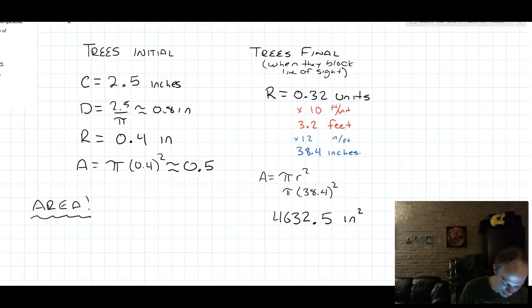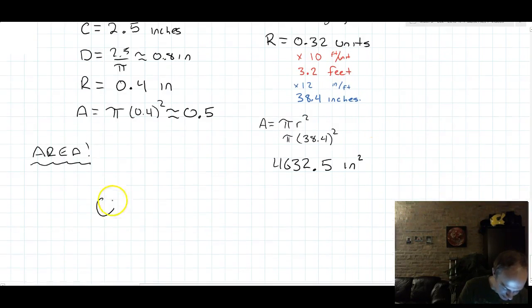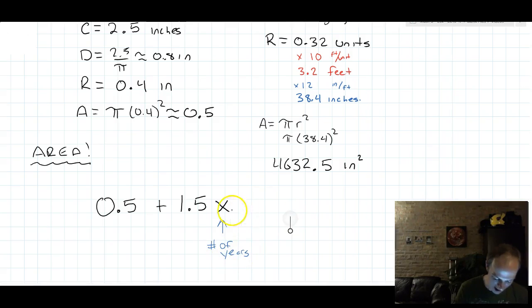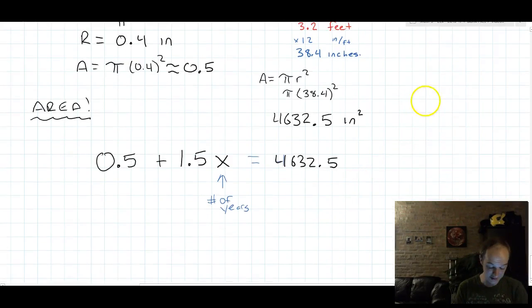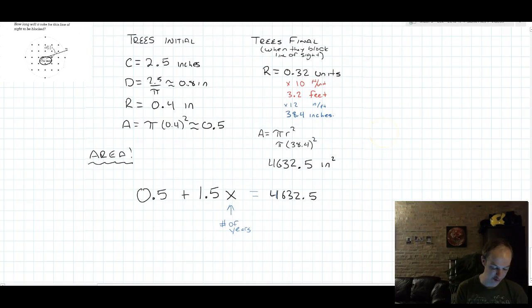Now we know three things about the area. We know the initial area is 0.5. We also know that the trees grow at a rate of 1.5 square inches every year. We're going to let x represent the number of years. And after some number of years, the trees will have an area of 4,632.5. And look what we've done. We took this information about our trees and made a linear equation.